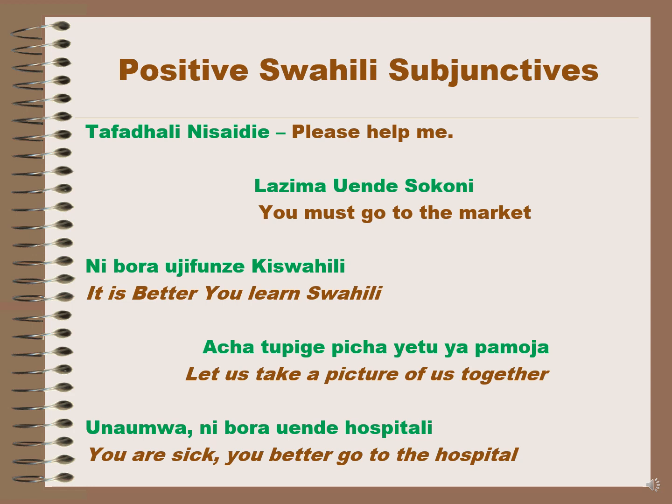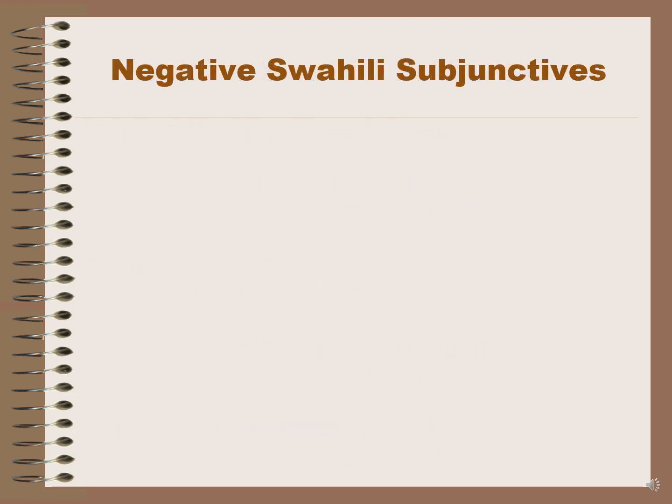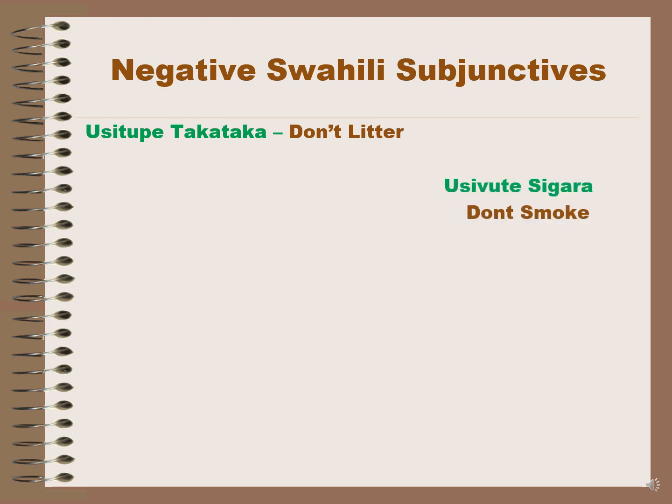Negative Swahili subjunctives use the word 'usi' before the action in the sentence. For example: usitupe takataka means 'don't litter'. Usivute sigara means 'don't smoke'. Usipite hapa means 'don't pass here'.